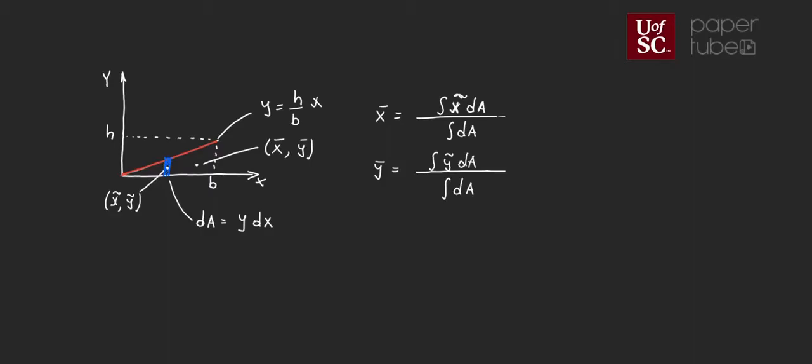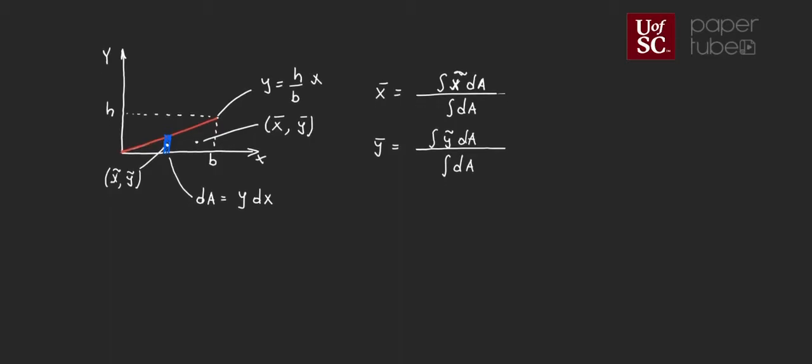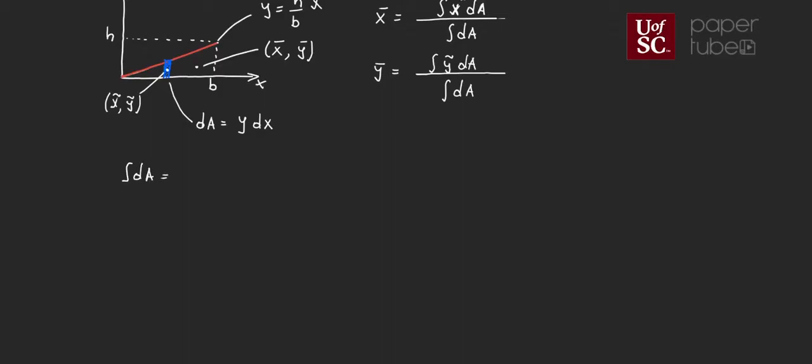With that in mind, we have everything to calculate the integral of dA. From calculus, that integral should equal the area of the triangle, giving us b times h over 2 — a good check that our definition of dA is correct. So let's calculate the integral of dA. We have dA = y dx, but we need to write y in terms of x.